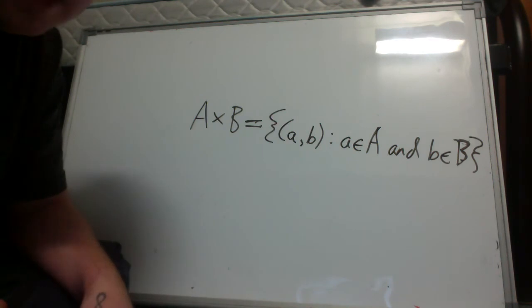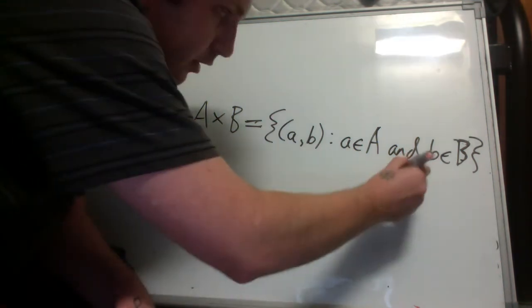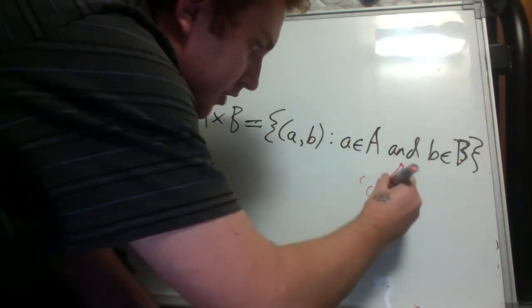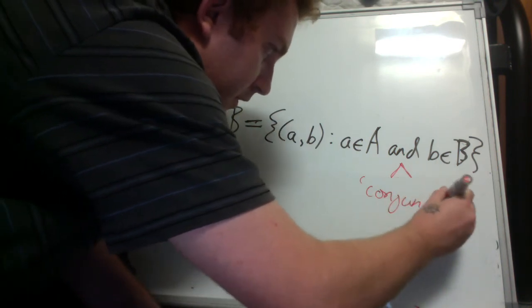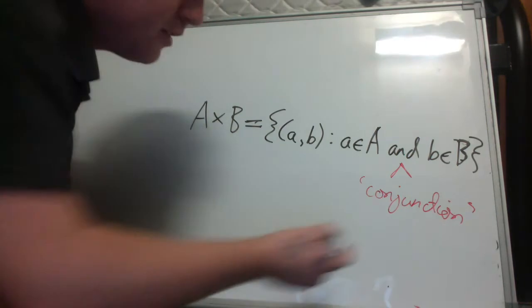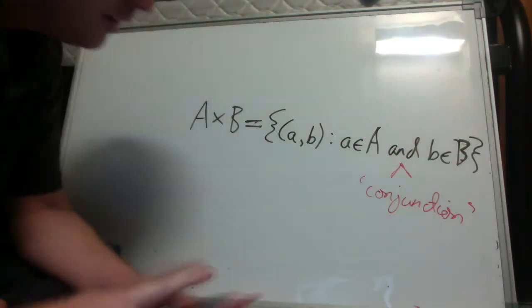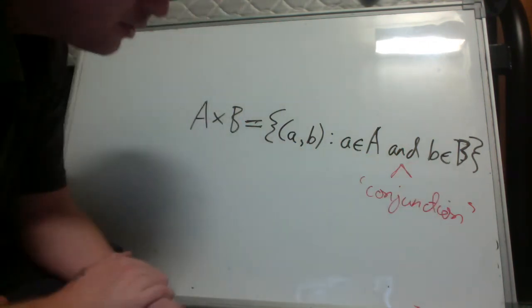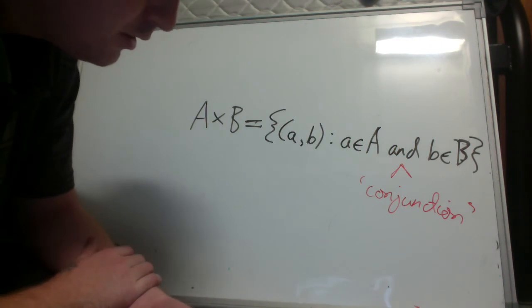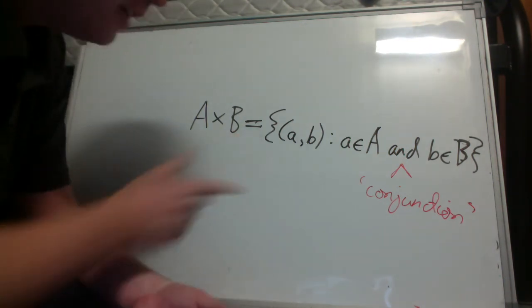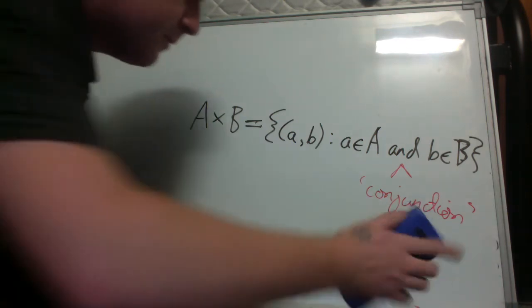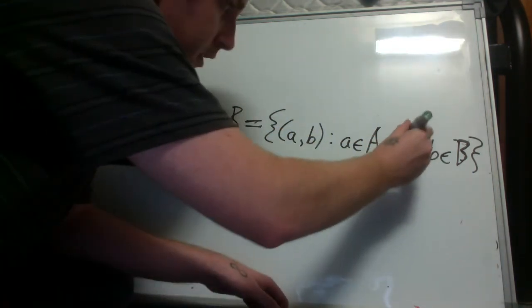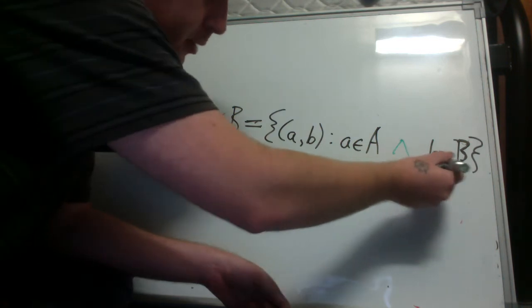Now from here on out I'm going to use the wedge notation for and, so this is conjunction. Essentially what this means is that the two statements have to both be true in order for the whole statement to be true, and it's false otherwise. You should look up conjunction if you want to know specifically and find a truth table for conjunction. Little a element a and little b element b.